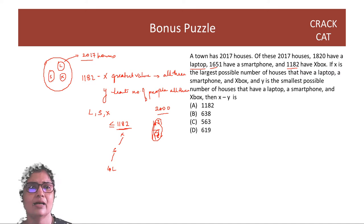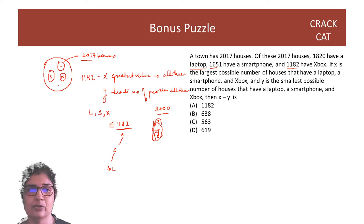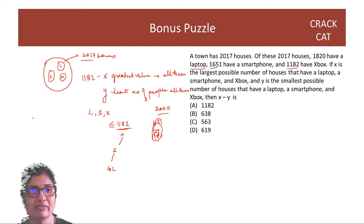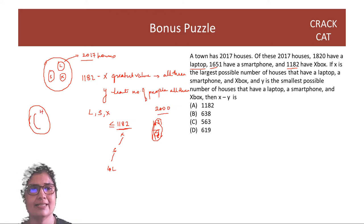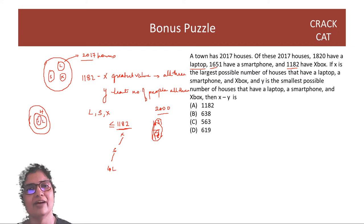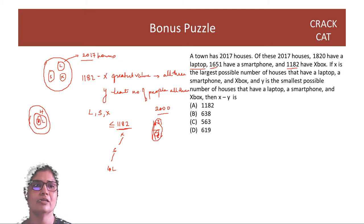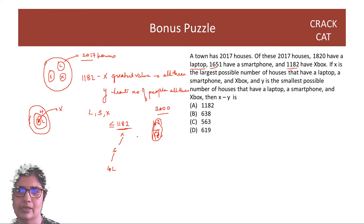I don't know whether there is a house that has all three. I don't know anything. So to find the greatest, let's say these are the houses, these are the laptops, these are the smartphones, and inside that you will get your Xboxes. So this circle inside is your Xbox — that's how you find the largest value.